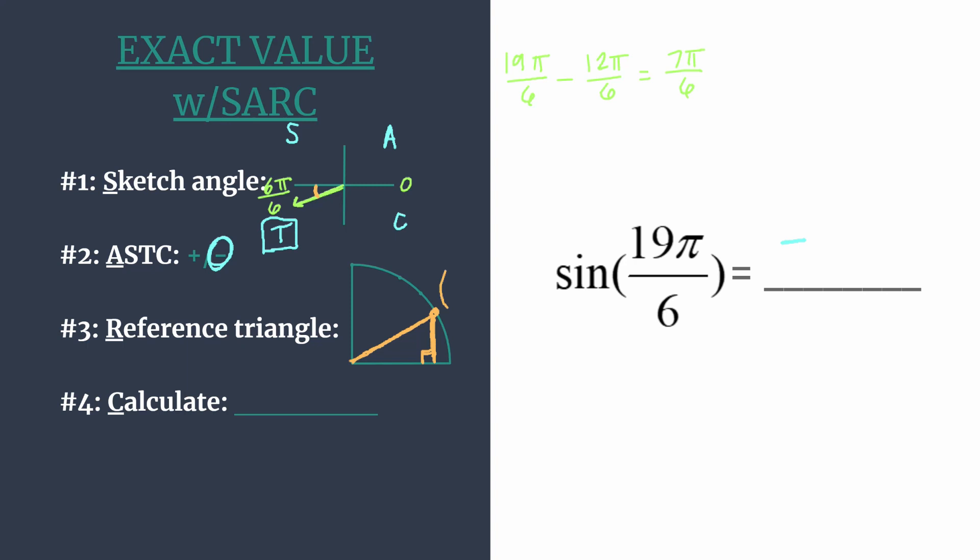All right, so we know that the longer leg is horizontal here, so the x-coordinate must be root 3 over 2, and the y-coordinate must be 1 half.